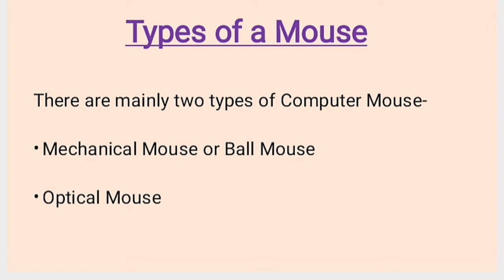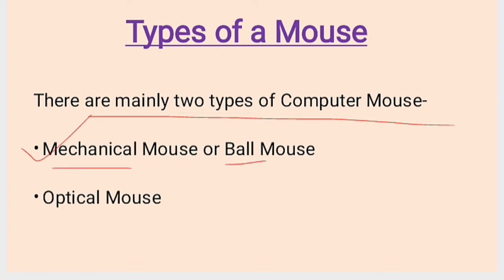First is types of a mouse. There are different types of a mouse — just as we have already learned that there are different types of computers and different types of keyboards. Now we are going to learn about the different types of mouse. There are mainly two types of computer mouse: first is mechanical mouse, or we can say ball mouse, and second is the optical mouse.